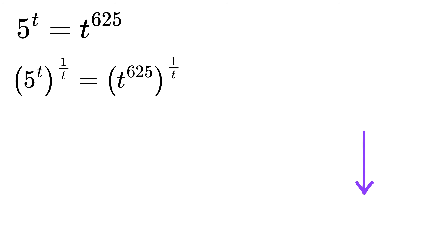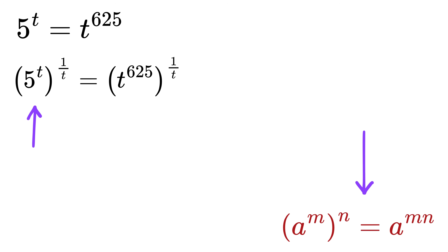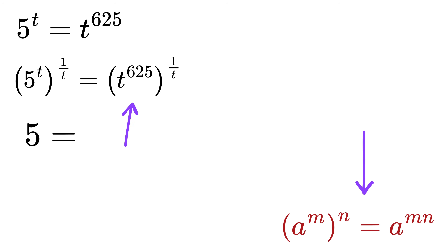Now use the power rule that says when we have a raised to m, and then the whole raised to n, we can rewrite it as a raised to m times n. So the left side becomes 5 raised to t times 1 over t, which is simply 5 raised to 1, which is just 5. And the right side becomes t raised to 625 over t.